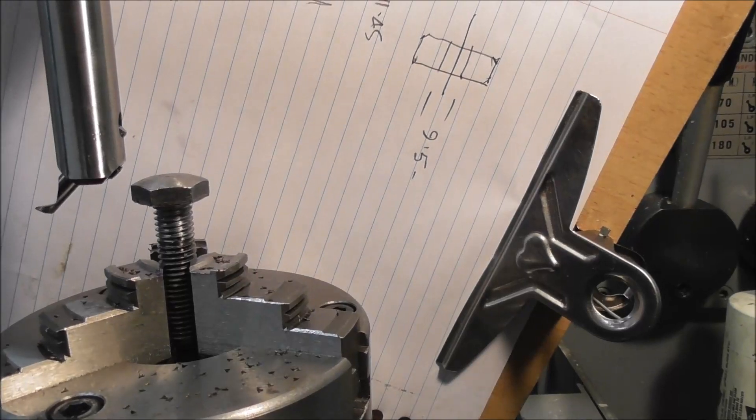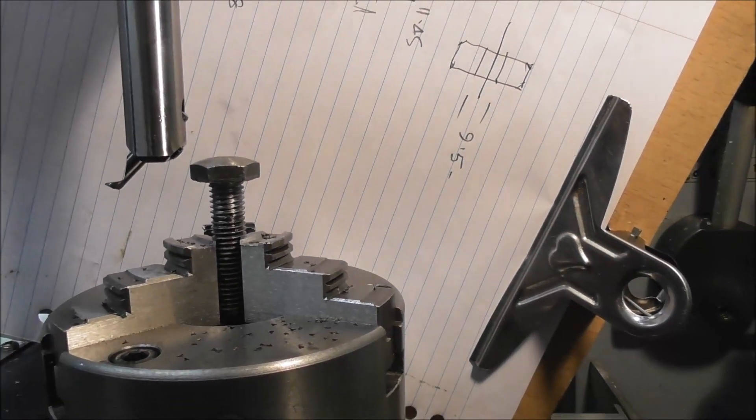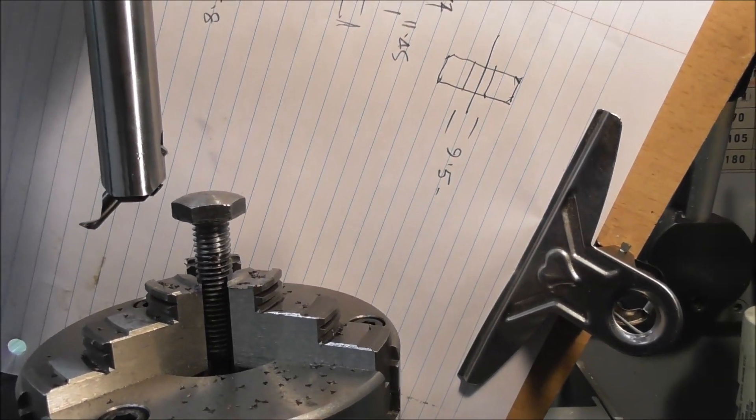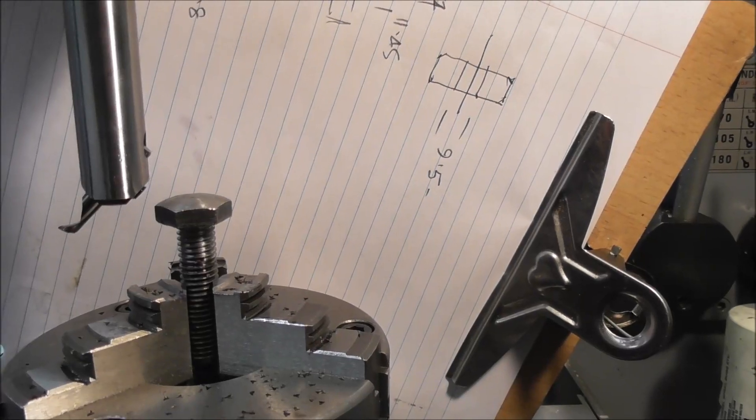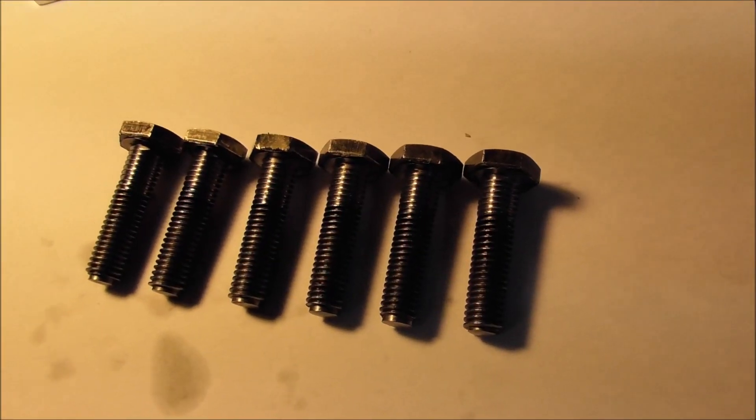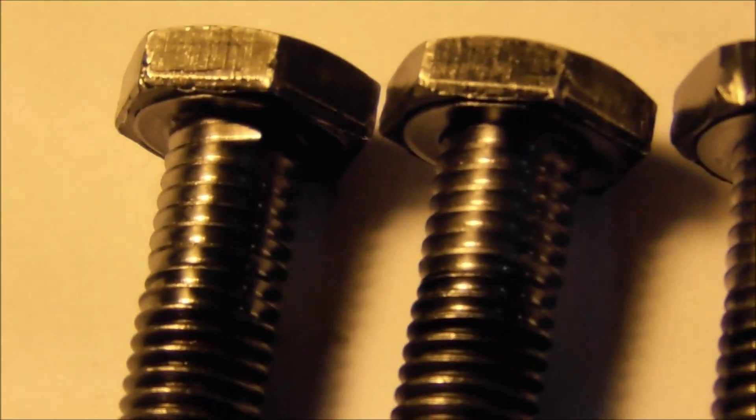It's completely different from screw cutting in a lathe, and this is a real advantage of the thread milling process. Death by a thousand cuts is much easier. That's all six adjusting screws cut now - very quick process.